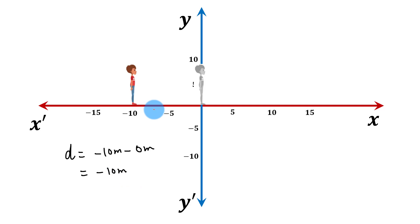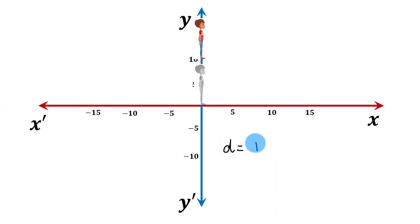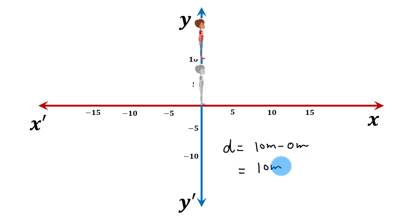Up till now, we have seen when the object moves in the horizontal direction. Let us see when the object moves in the vertical direction. Suppose this boy moves upwards by 10 meters. In this case, displacement can be calculated as 10 meters minus 0 meters, which equals 10 meters.